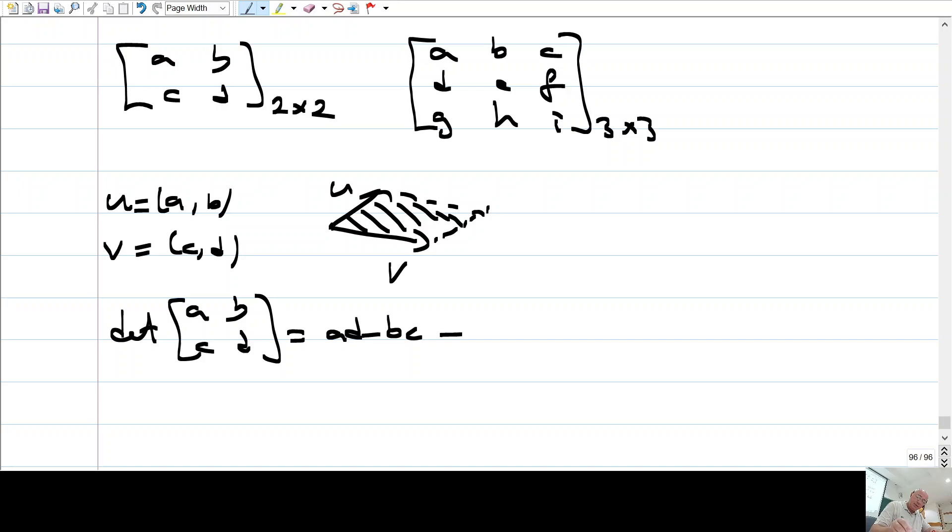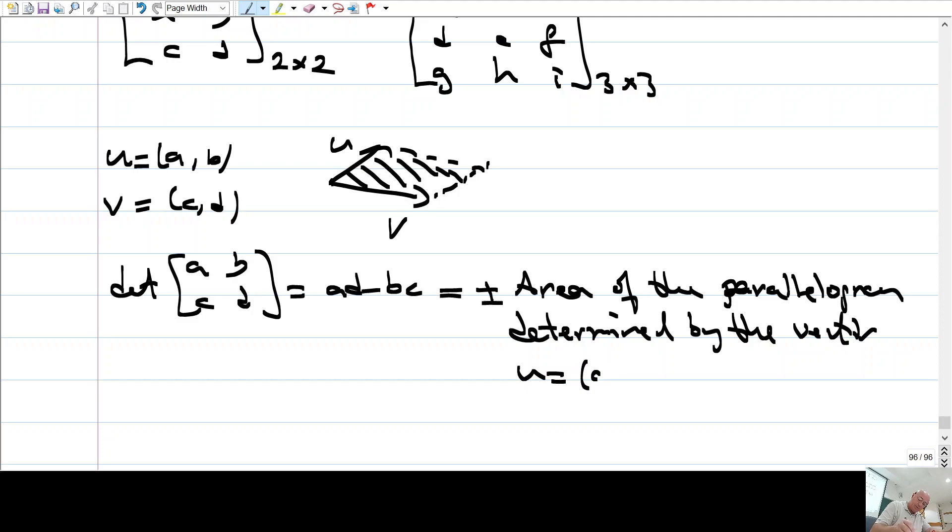So, determinant of this matrix is defined to be A D minus B C. But it is nothing but plus or minus the area of the parallelogram determined by the vectors u is, let's say, a, b and v, c, d.